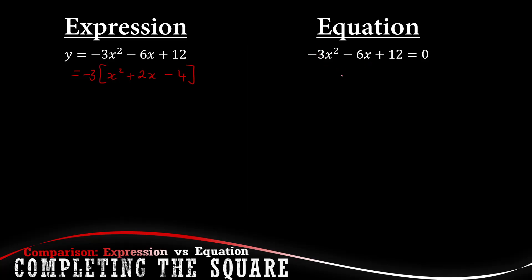So negative 12, and then we divide everything with negative 3. This will then leave us with x squared plus 2x equals 4. So now notice, now the difference here.